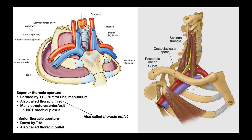The anterior and middle scalenes form a triangle. They start up at the top, come down to corners, and there's a space between them called the interscalene space. The yellow structure emerging from within that interscalene space and moving out laterally is the brachial plexus. An important point is that the brachial plexus emerges from between the anterior and middle scalenes through that interscalene space.